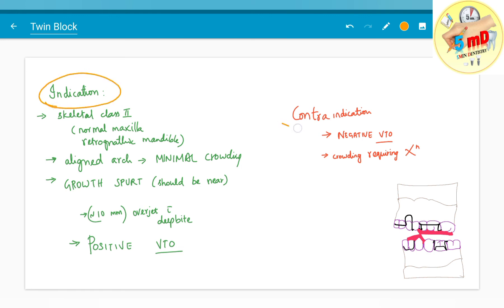Finally with indications and contraindications we will finish this presentation. The indications for twin block appliance mainly includes skeletal class 2, that is normal maxilla and retrognathic mandible is a common indication and the arch should be aligned. So minimal crowding is a must.